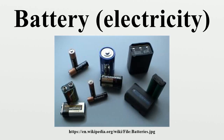Primary batteries are used once and discarded. The electrode materials are irreversibly changed during discharge. Common examples are the alkaline battery used for flashlights and a multitude of portable devices. Secondary batteries can be discharged and recharged multiple times.